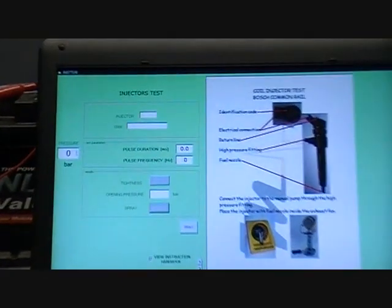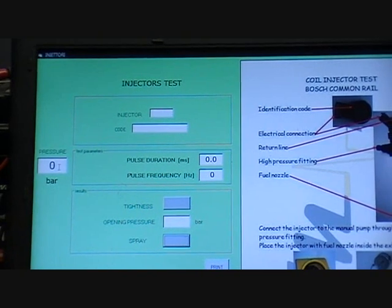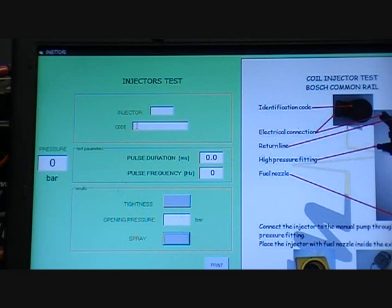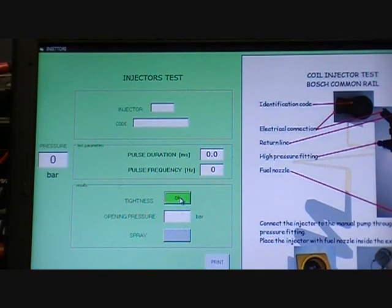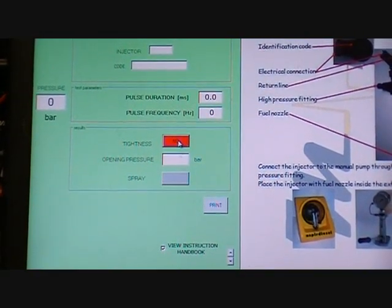With the Bluetooth software then you can view the pressure here, the pressure that we're reading from a rail sensor on the hand pump. You can insert injector part number, you can view the pulse duration here, the frequency here, and then you can say okay or not okay for the test, for the tightness test.